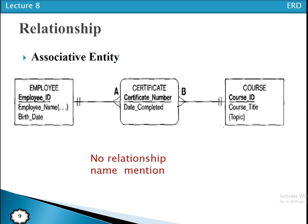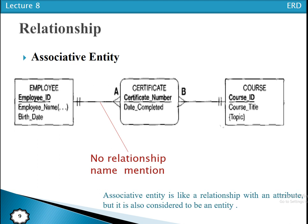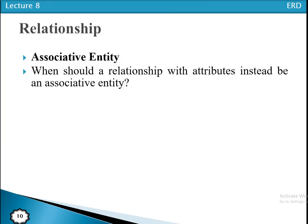In an associative entity type, there is no relationship name mentioned separately — the associative entity type itself, such as 'certificate', acts as a relationship that associates instances of two different entity types. An associative entity type is like a relationship with an attribute, but it is also considered to be an entity.